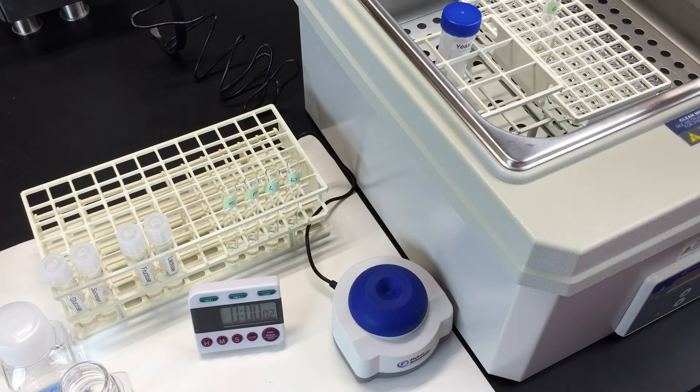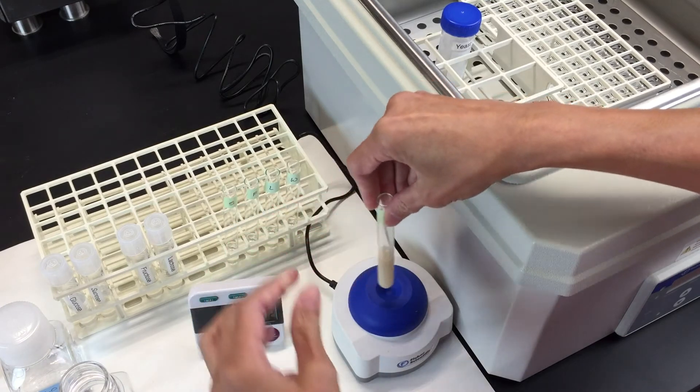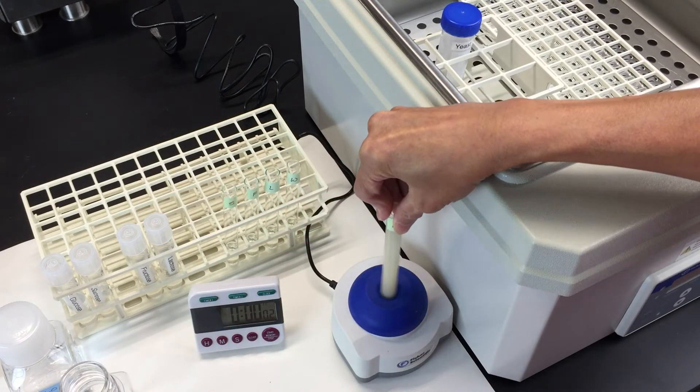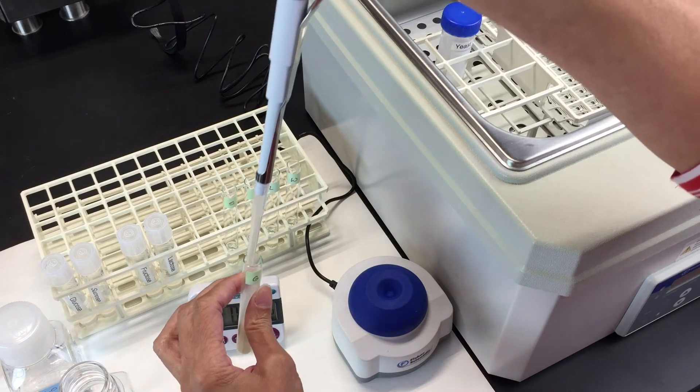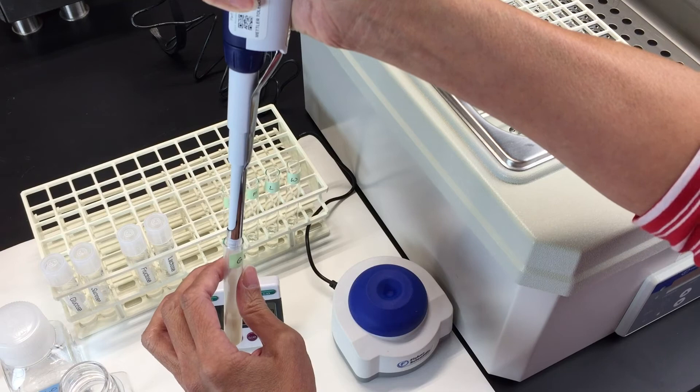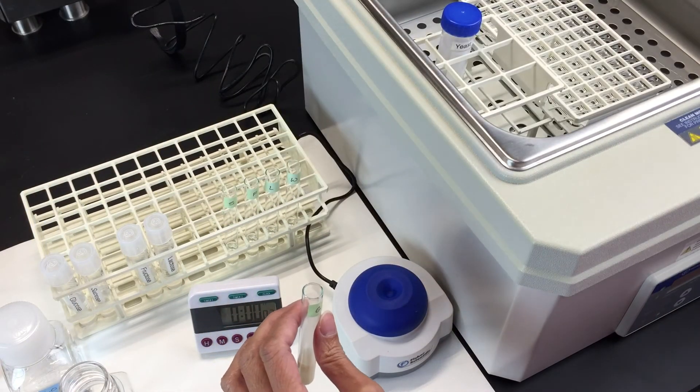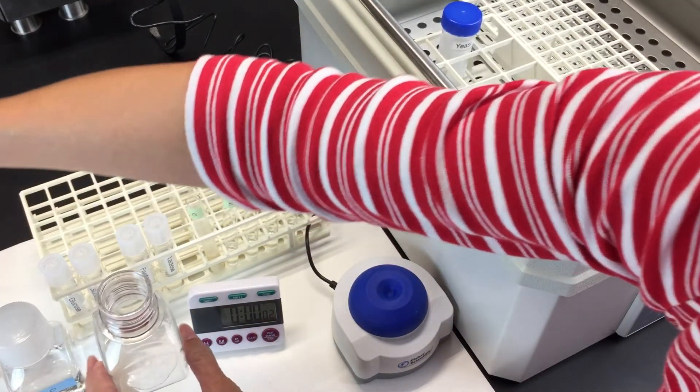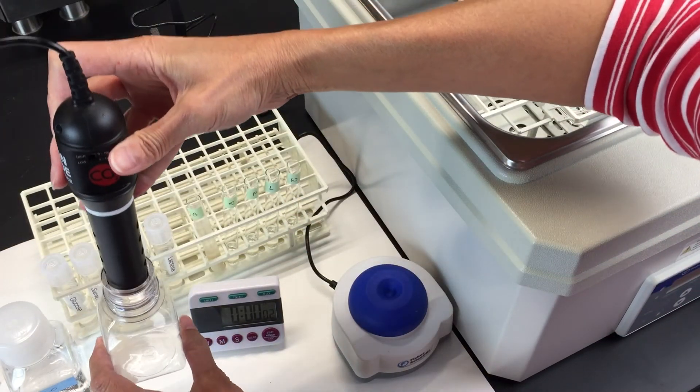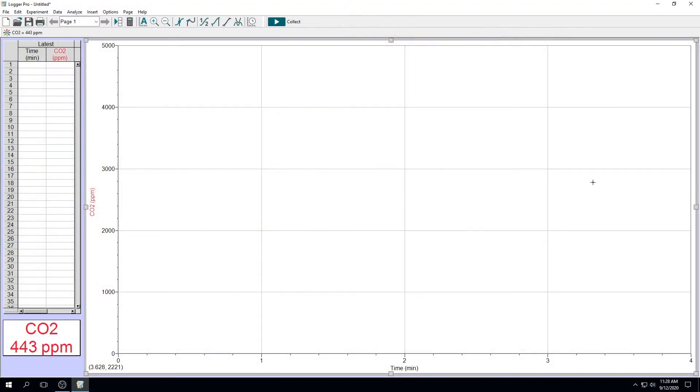After 10 minutes, remove your tube from the water bath. Mix it, and quickly take one milliliter and place it into your respiration chamber. Now take your respiration chamber and your carbon dioxide sensor and place it snugly in the top. And click the collect button to begin your data collection.